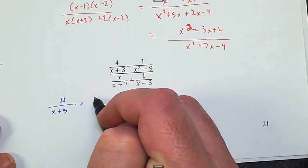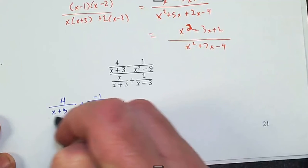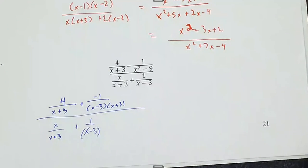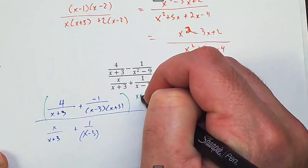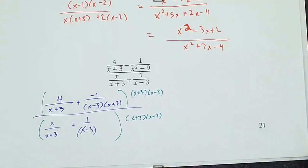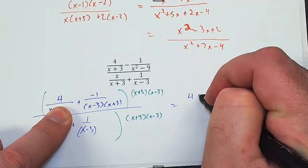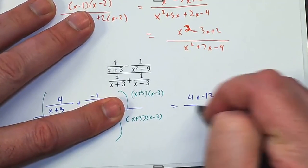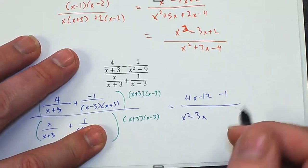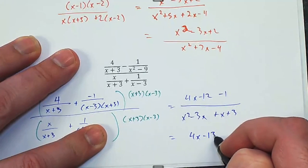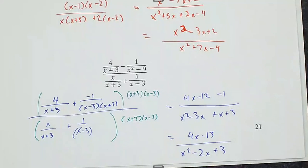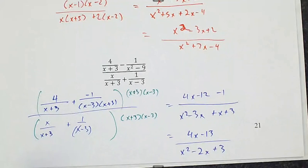For part D, factor first — rewriting as adding negative 1/(x − 3)(x + 3). Everything else is already factored. Multiply top and bottom by (x − 3)(x + 3). Top: (x + 3) cancels giving 4(x − 3) = 4x − 12; then minus 1. Bottom: (x + 3) cancels giving x² − 3x; then (x − 3) cancels giving x + 3. Combining like terms gives 4x − 13 over x² − 2x + 3, and neither expression factors further.